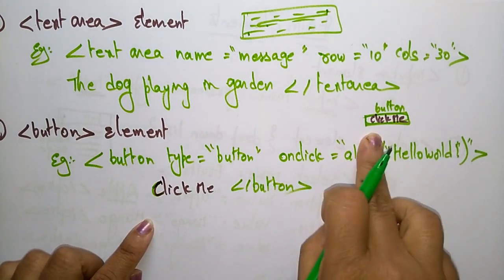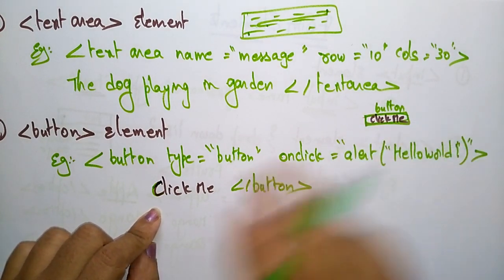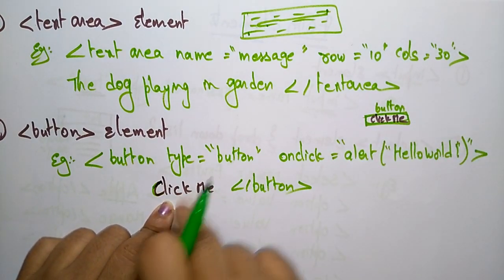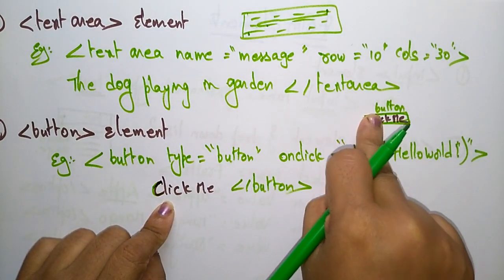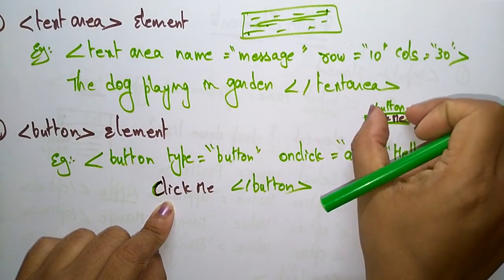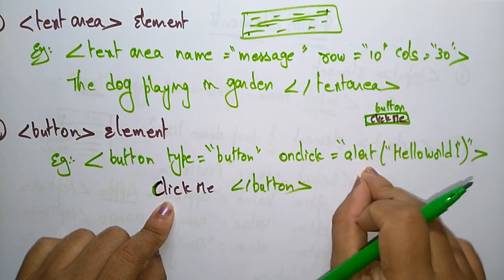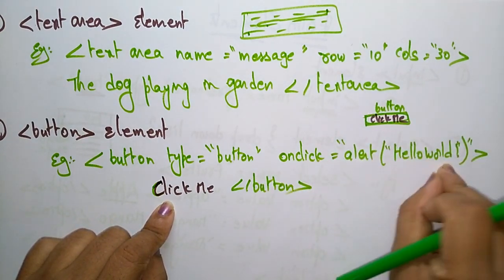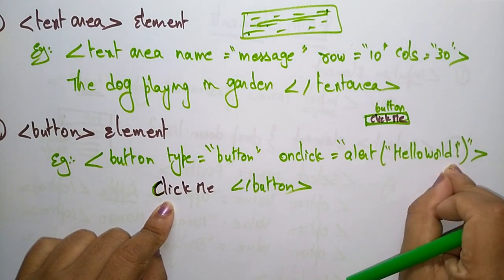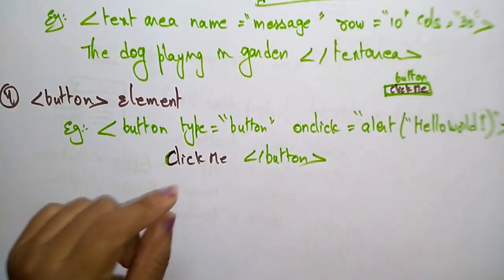Whatever message you write between the button tags will be displayed on the button. When clicked, it performs the onclick operation — an alert with 'Hello World' will appear on the screen.